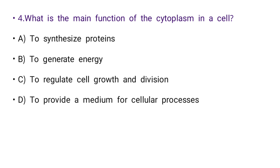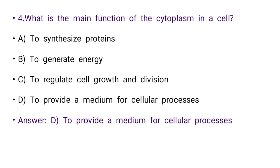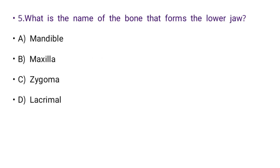Question number four: What is the main function of the cytoplasm in a cell? Options: to synthesize protein, to generate energy, to regulate cell growth and division, or to provide a medium for cellular processes. The right answer is D: to provide a medium for cellular processes.